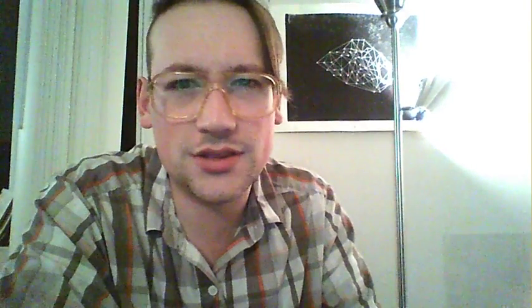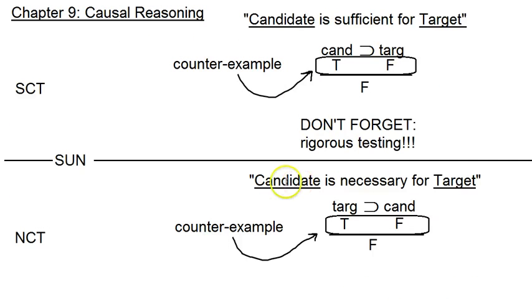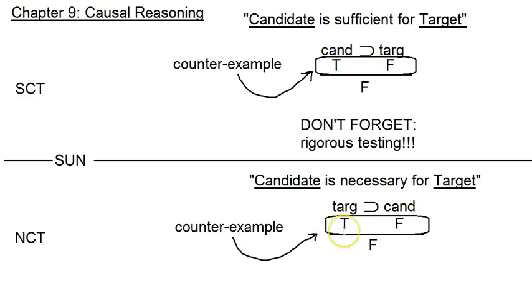Let's get back to it. We talked about the SCT; let me run this example with the NCT with our garden beds. The NCT is the same thing as the SCT, except the pattern is different. For whatever reason, students find this a little less intuitive, which is another reason I like to do it mechanically so you don't have to rely on intuition alone. If I'm testing whether something is necessary for something else, I'm looking for a different counter example now: a case where the target is present — in our example, cases where the plants grow — and the candidate is actually not present.